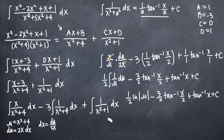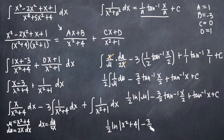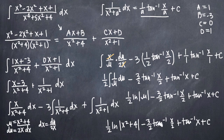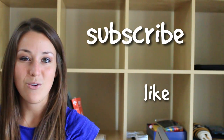Our final step is to plug back in for u. Since u equals x squared plus 4, we get: one half times the natural log of the absolute value of x squared plus 4, minus 3 halves arctan of x over 2, plus arctan of x, plus C. You can optionally factor out one half to simplify, but you can leave it in this form — this is your final answer. I hope you found that video helpful; if you did, like this video and subscribe to be notified of future videos.